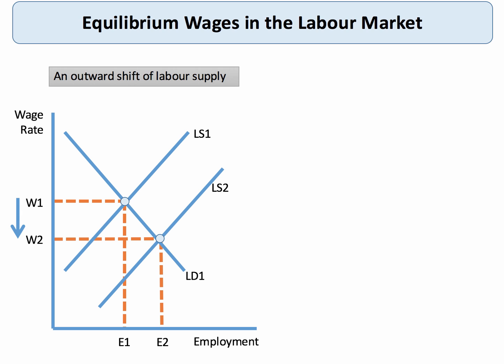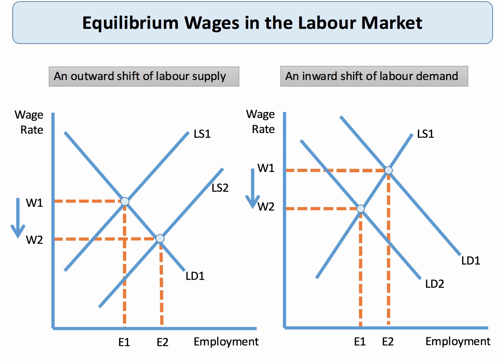Thirdly, let's take a look at an inward shift of labour demand, perhaps the result of a recession. Labour demand shifts from LD1 to LD2. That drives down the equilibrium wage rate on offer in the industry, and of course also leads to a contraction of employment.